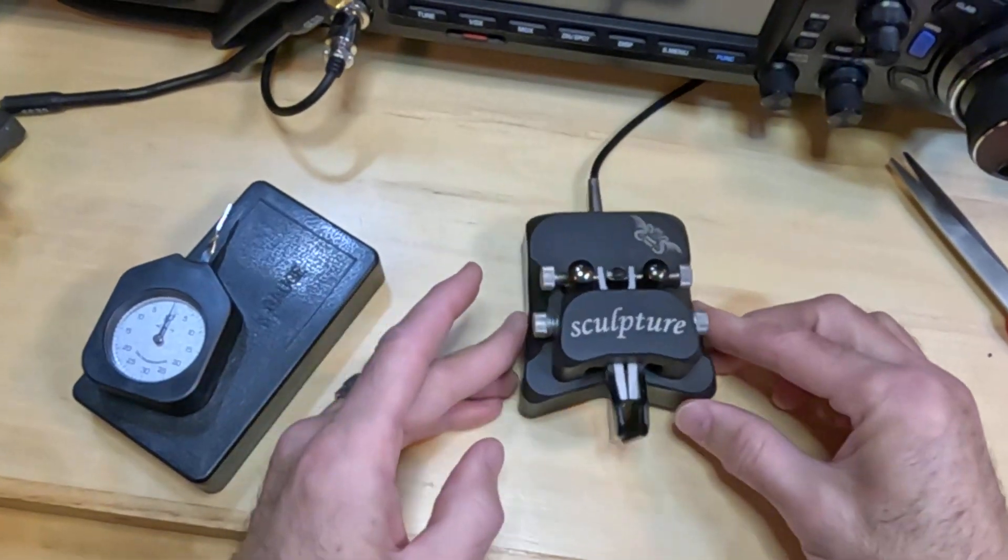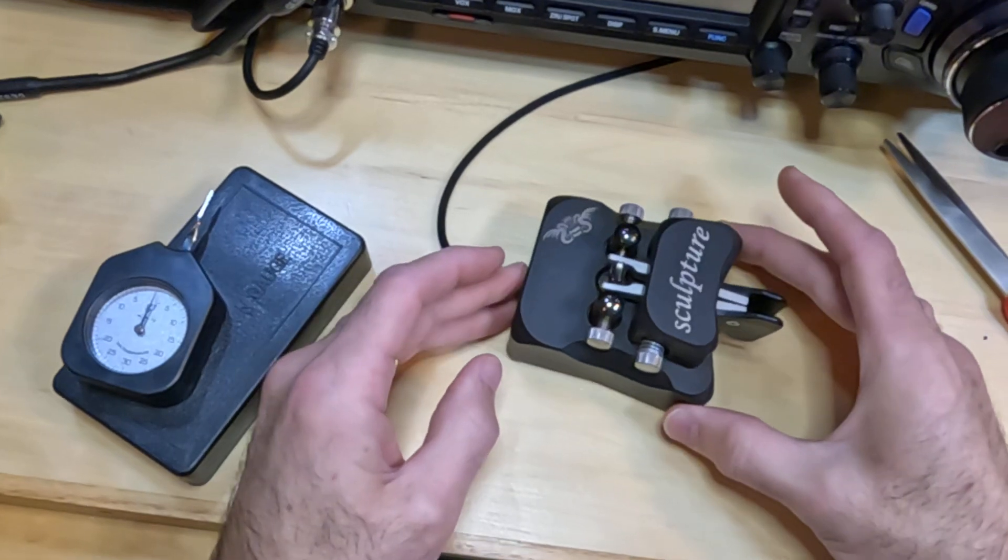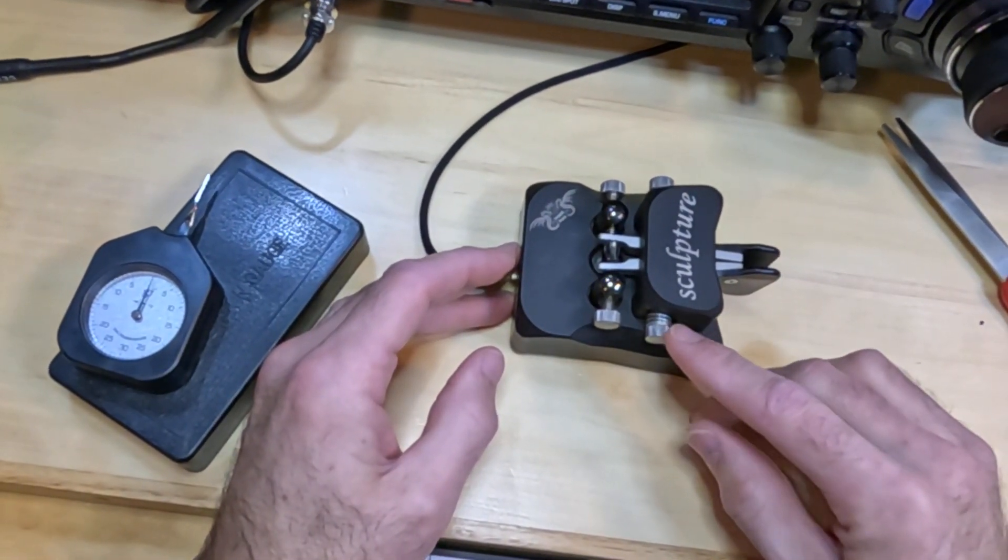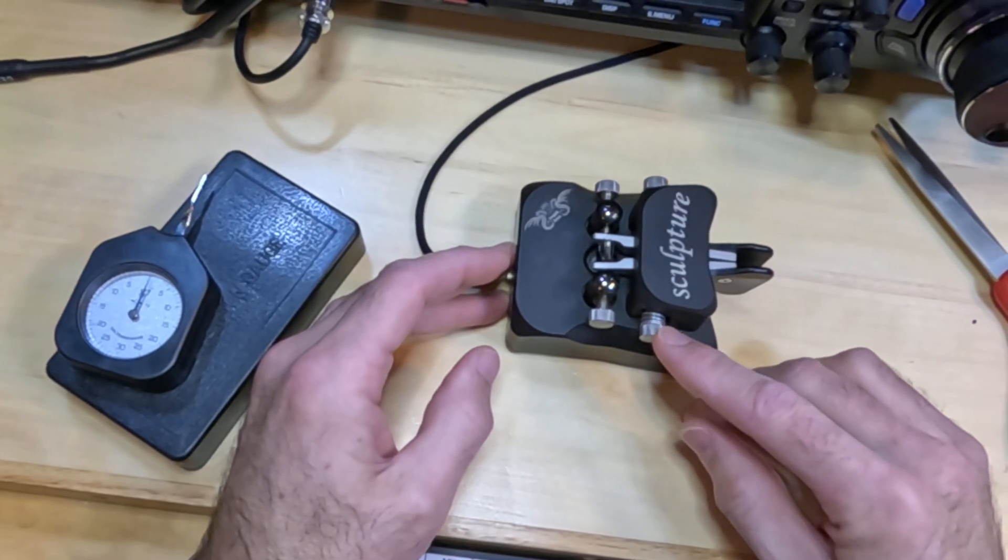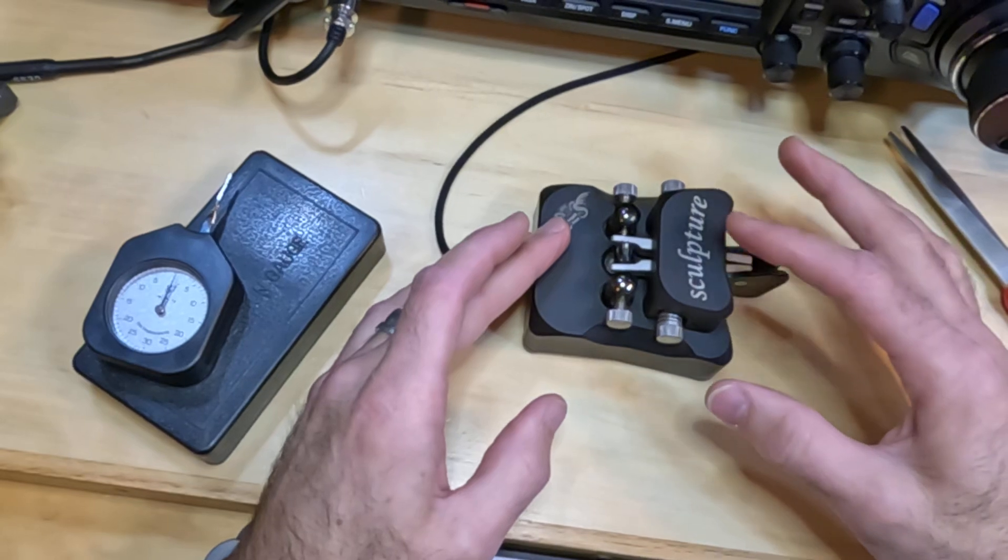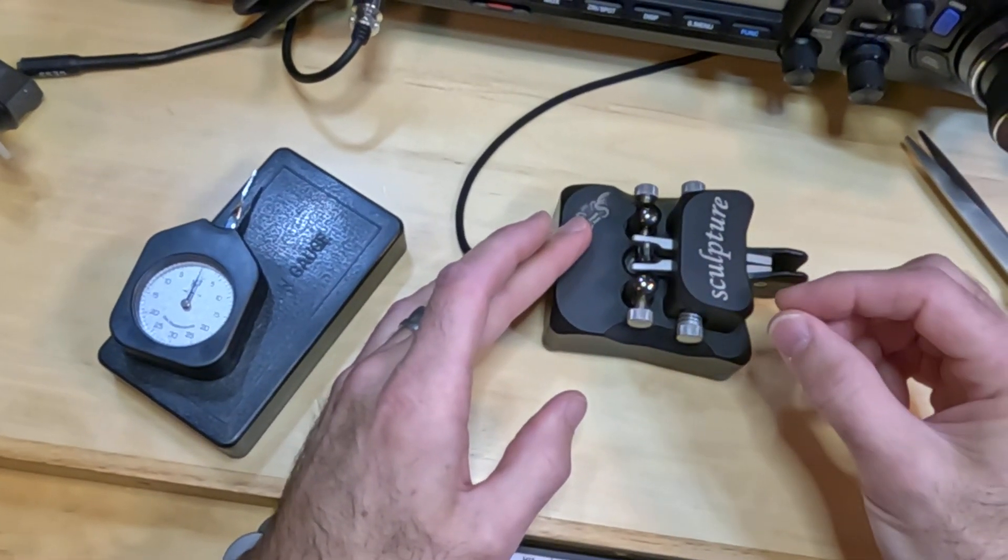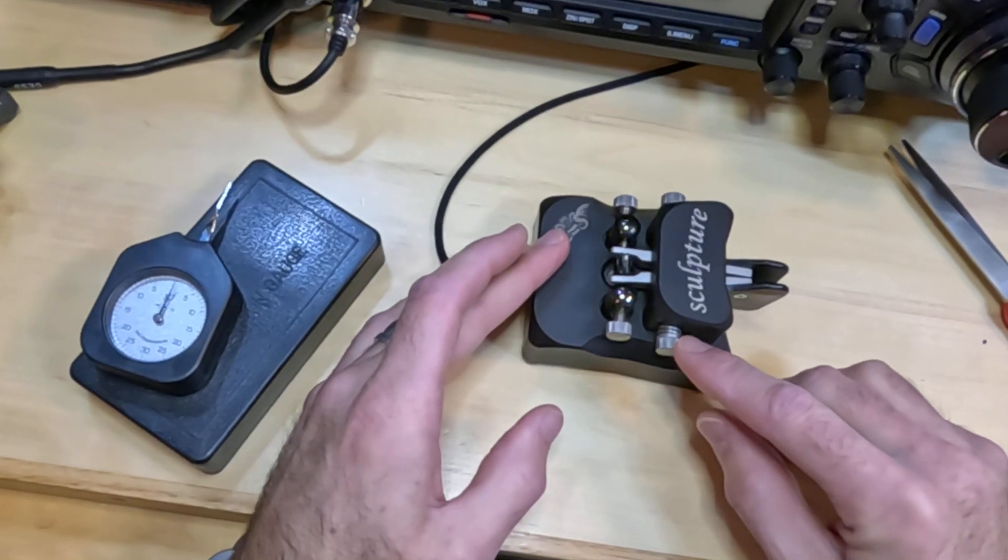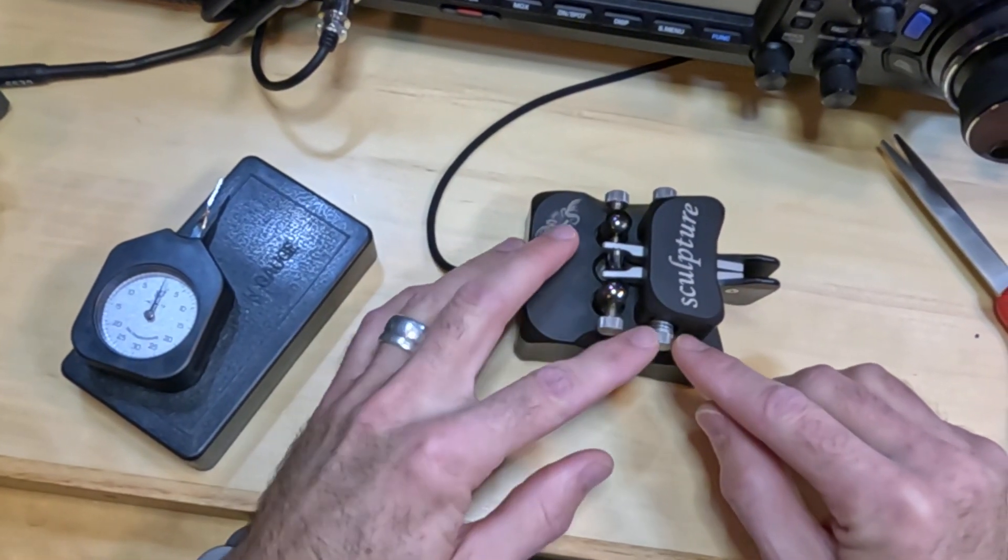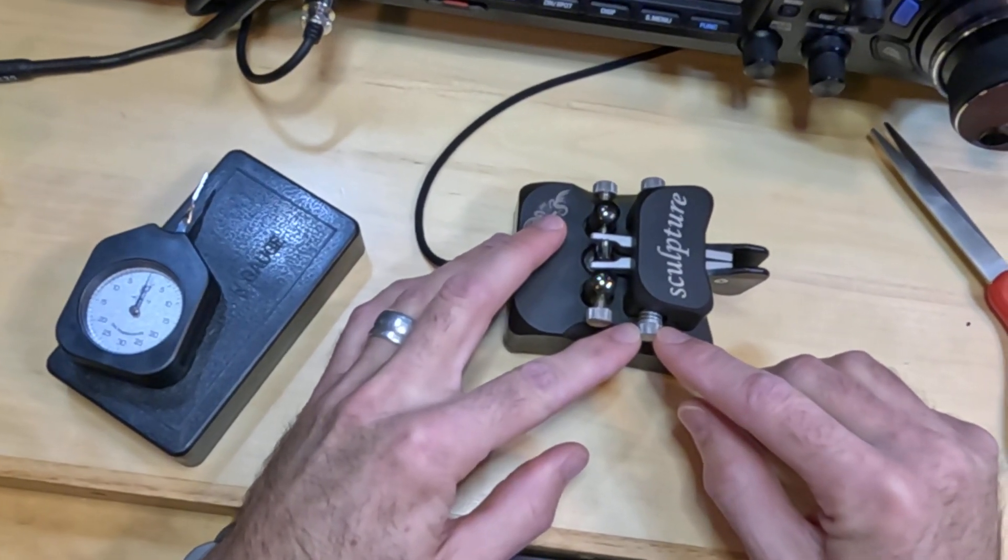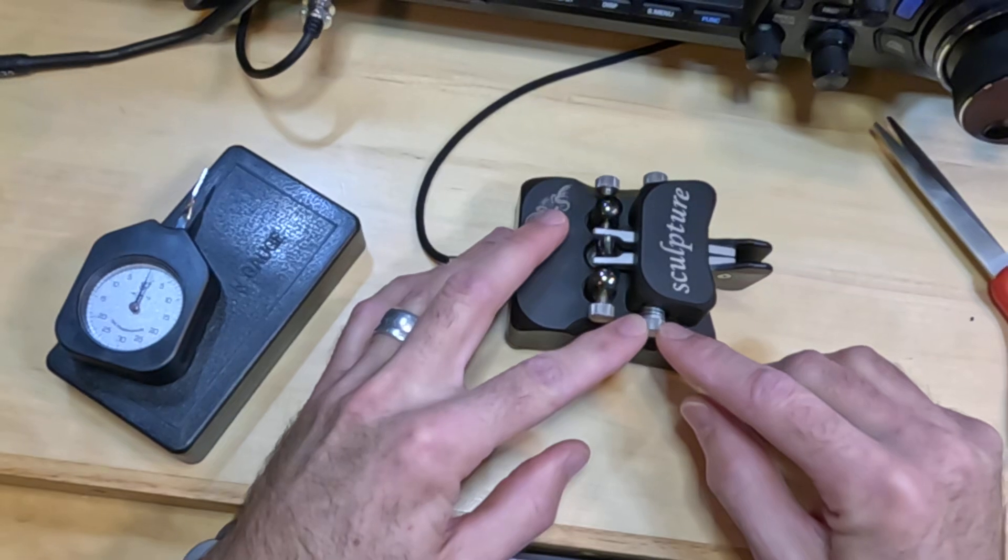The other thing I would mention is I noticed that I was constantly having to adjust the tension. And this is a magnetic tension, not a spring tension. So there's two opposing magnets inside there. And I was constantly having to readjust my keys and I figured out that I was inadvertently turning this setting just from frequently handling the key.